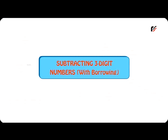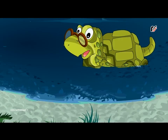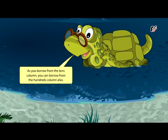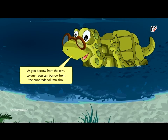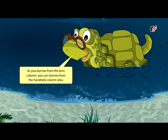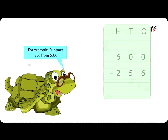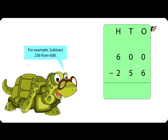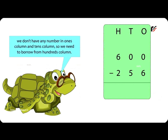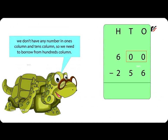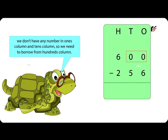Subtracting three-digit numbers with borrowing. You can borrow from the tens column, and you can also borrow from the hundreds column. For example, to subtract 256 from 600, we don't have any number in the ones column or tens column, so we need to borrow from the hundreds column.